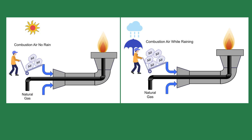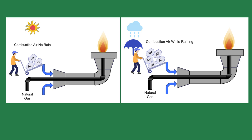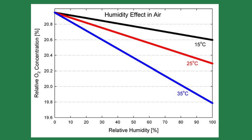The other factor affecting the air to fuel ratio when using combustion air vented from outside is humidity. Moisture displaces oxygen in the air, so you need more air when it's raining than when it's dry. At zero percent humidity, the oxygen level in the air is about 20.9 percent. At 50 percent humidity, the oxygen level drops to 20.5 percent. At 100 percent humidity, it drops to 20.1 percent. Combining rising humidity and rising temperatures can create a bad situation.